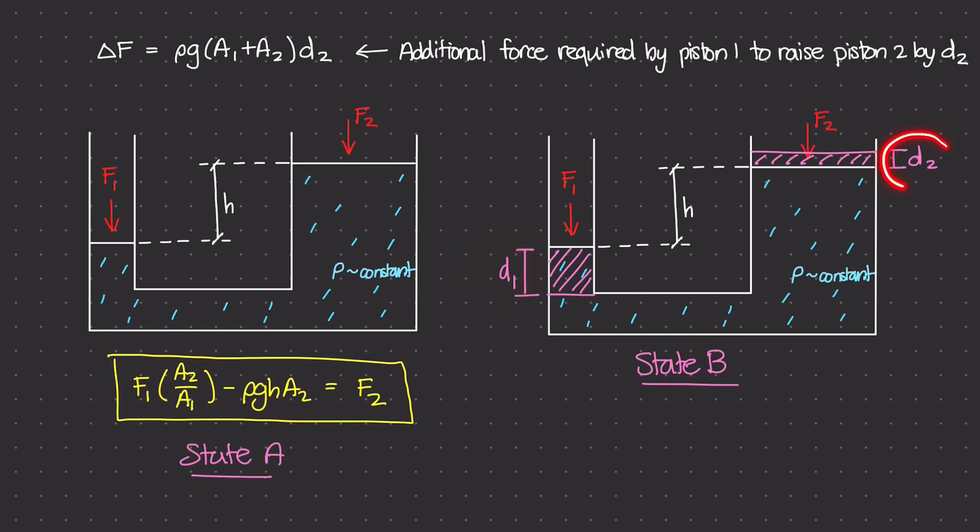D1 is a lot bigger than D2. And that makes sense, right? Because piston 1 is smaller. So you have to move a lot more further downward to get piston 2 to go up by even just a small amount.